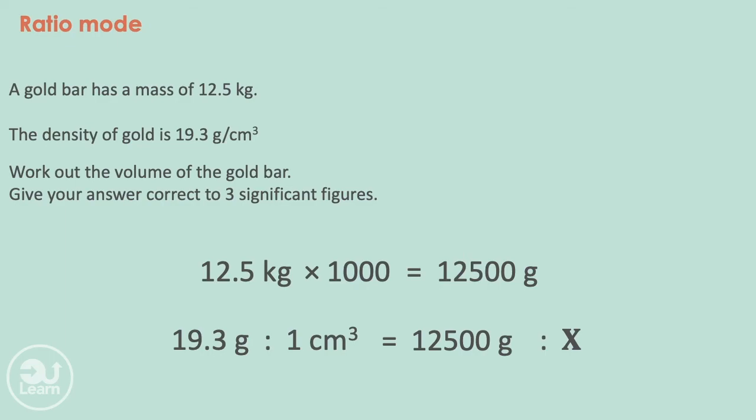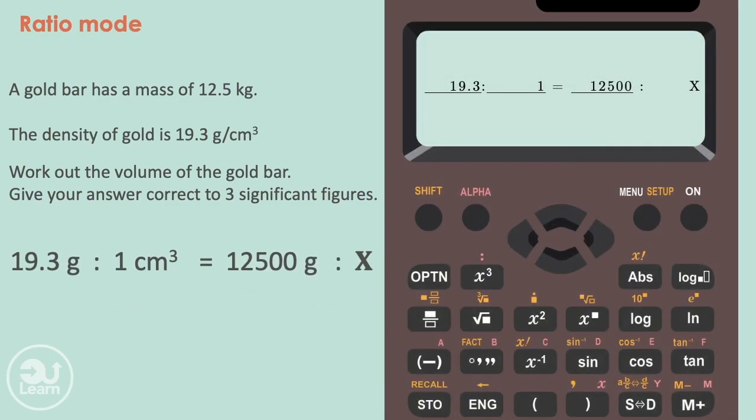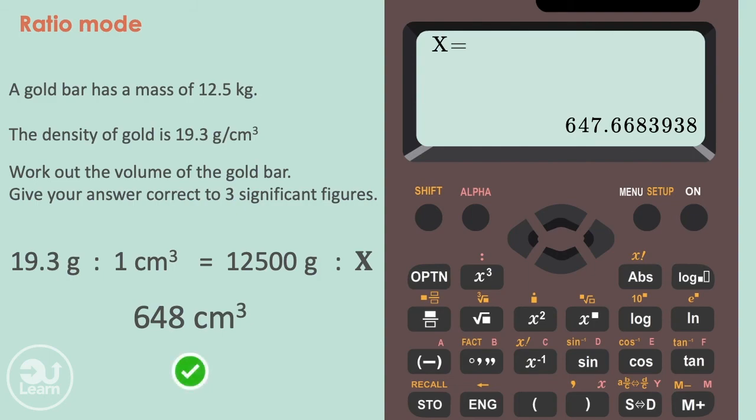And now repeat the process that we've been doing for the last few questions and place the values into the calculator, then pressing equals. This gives us 647.6683938 centimeters cubed. Now the question asks us to round it to three significant figures. So therefore our final answer is 648 centimeters cubed.